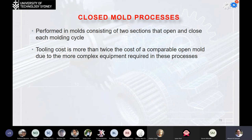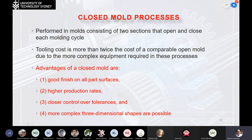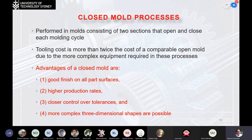Closed mold processing is performed in a mold consisting of two sections that open and close each molding cycle. Tooling cost is more than twice the cost of a comparable open mold due to more complex tooling. The advantages of closed mold include good surface finishing on all part surfaces — unlike open mold where only the mold-facing side has good finish — higher production rate with faster curing, closer control over tolerances, and the possibility of more complex three-dimensional shapes.